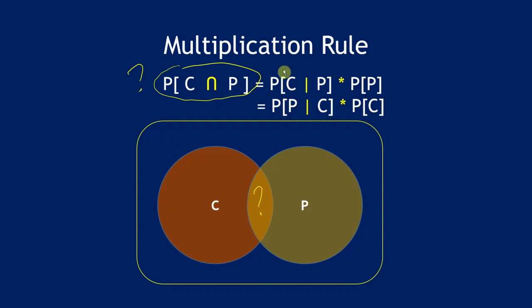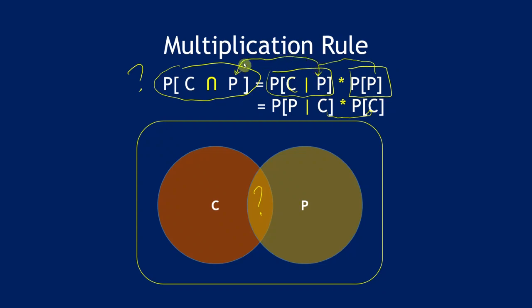For example, the probability of chocolate given peanuts, multiplied by the probability of peanuts, gives us the intersection. We can also do it the other way: peanuts given chocolate, multiplied by the probability of chocolate. Either way gives you the same value for the intersection. The condition must stay consistent across the equation, and the condition is always tied to the new sample space.